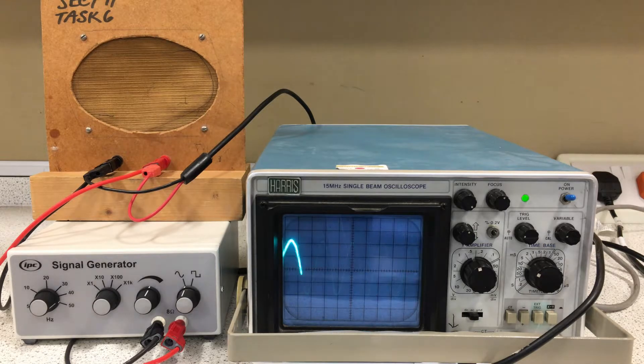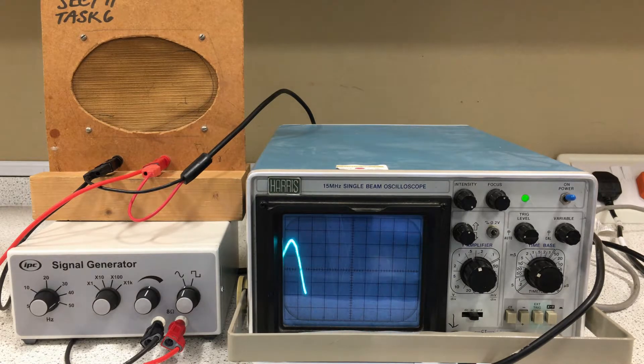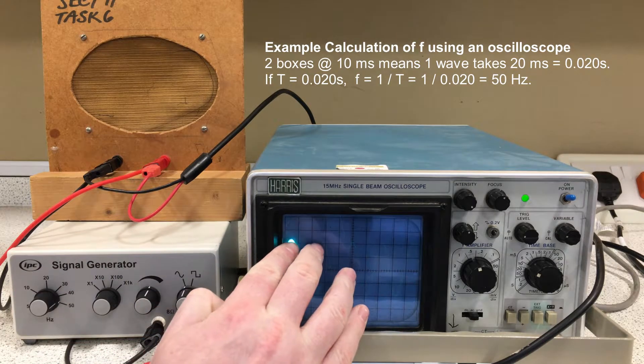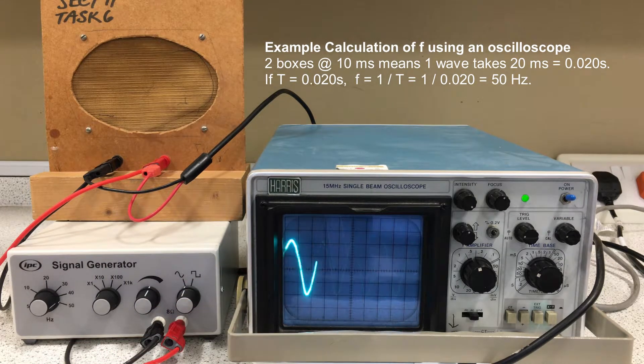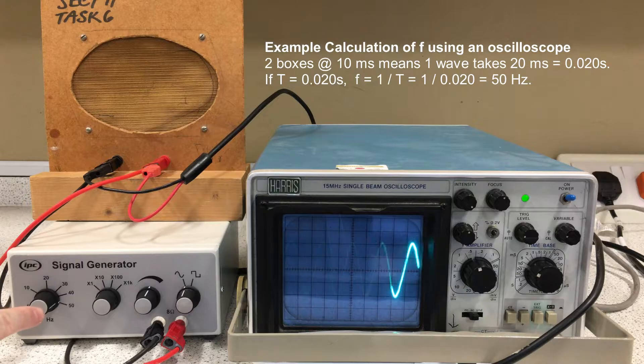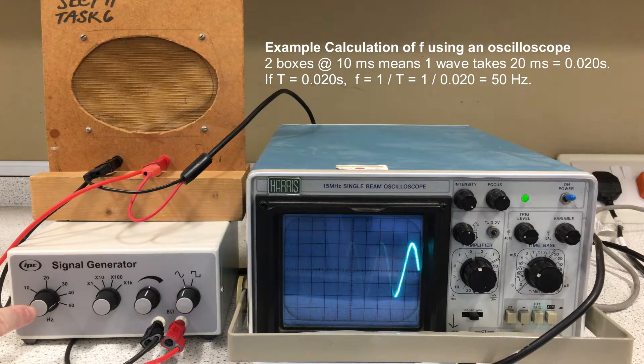What I've got it set to just now is 10 ms per box and since we can see these peaks are two boxes apart, it's taking 20 ms to produce one wave. That matches our 50 Hz frequency on the signal generator.